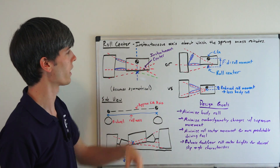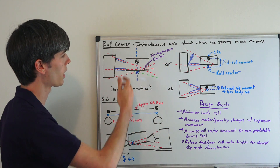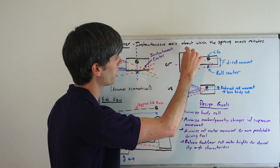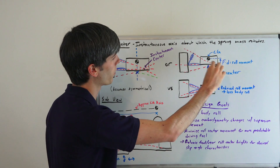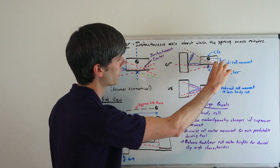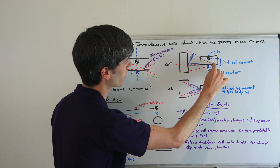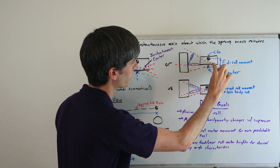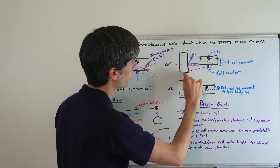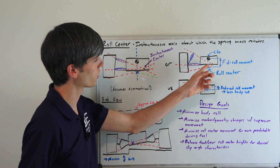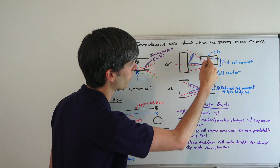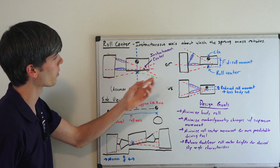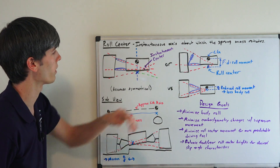Now if you were to look at a McPherson strut versus a double wishbone, it's very similar in concept. You just take where that joint is up at the top and then go perpendicular to it, so you'd have a line coming down here and a line going across — there's your instantaneous center. Then you draw a dotted line from the center of the wheel to that line, and your roll center will be located underneath in a similar location based on the geometry.